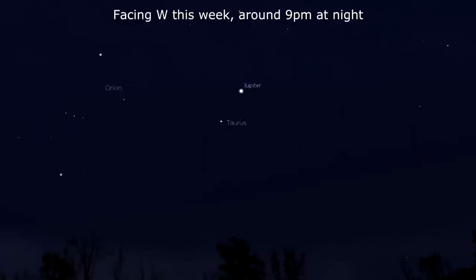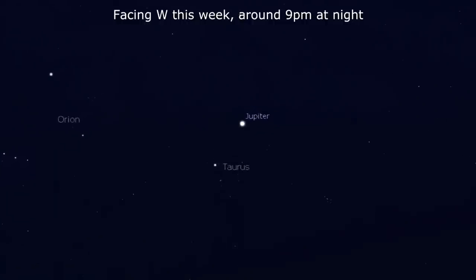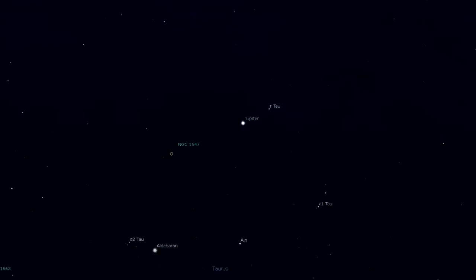Jupiter passes right between the double star Tau Tauri and the open cluster NGC 1647 on the 3rd and 4th of this week.